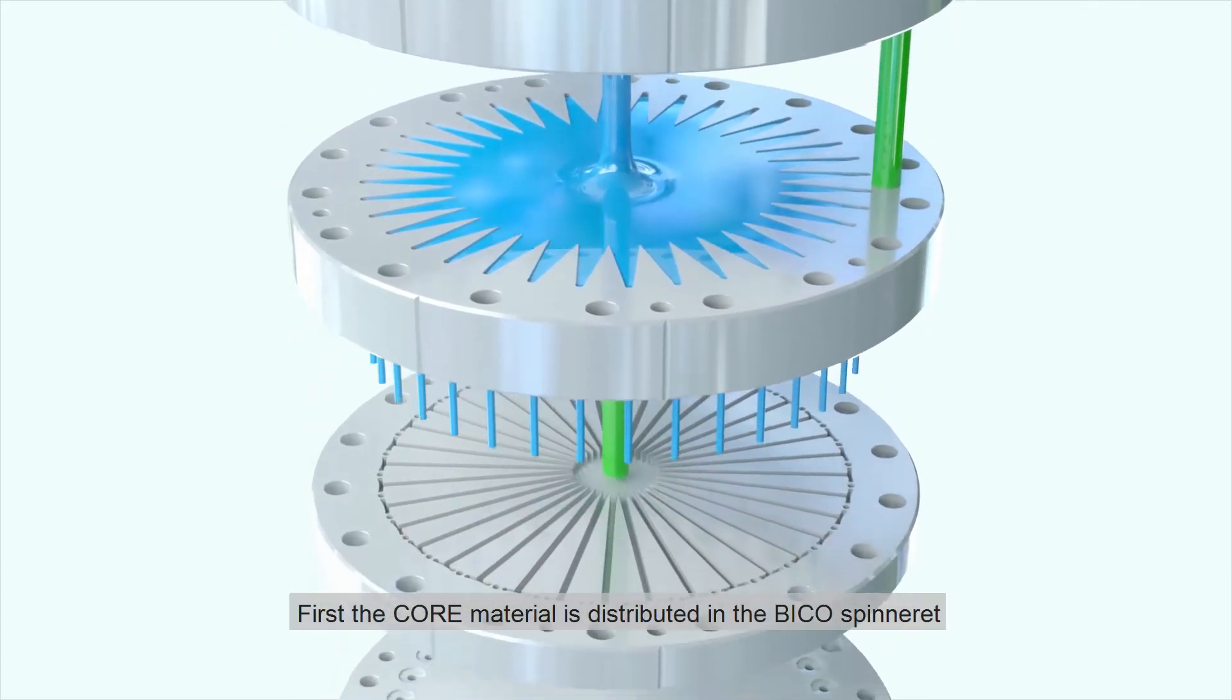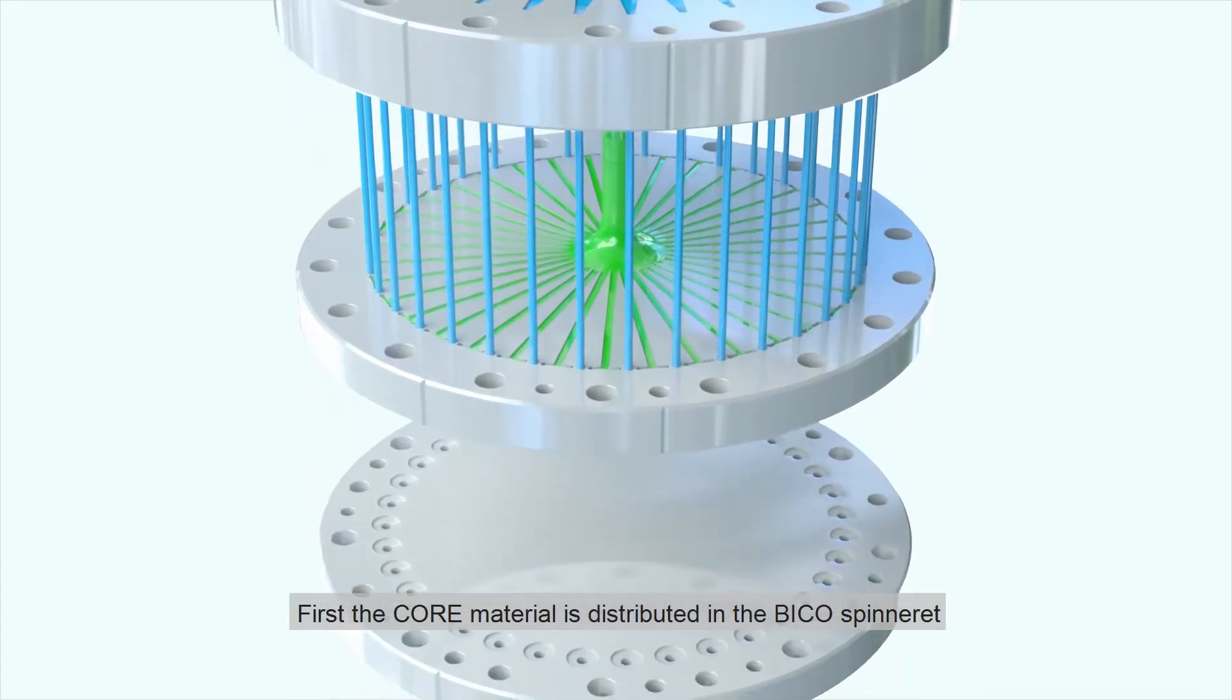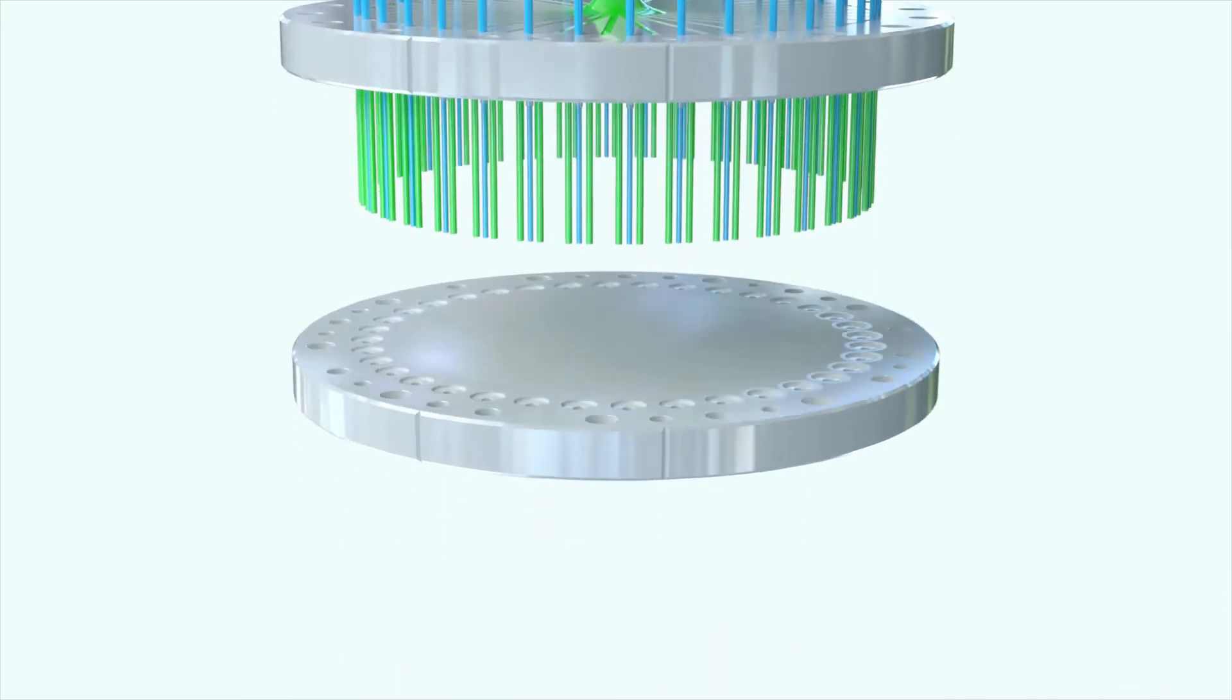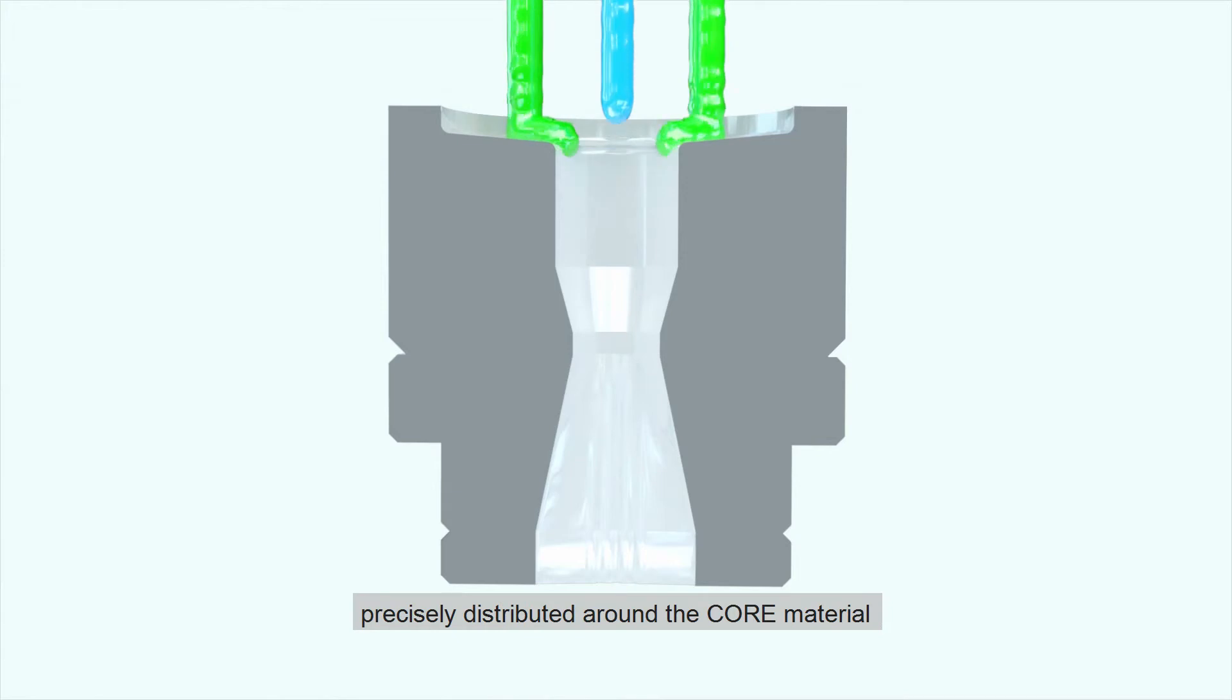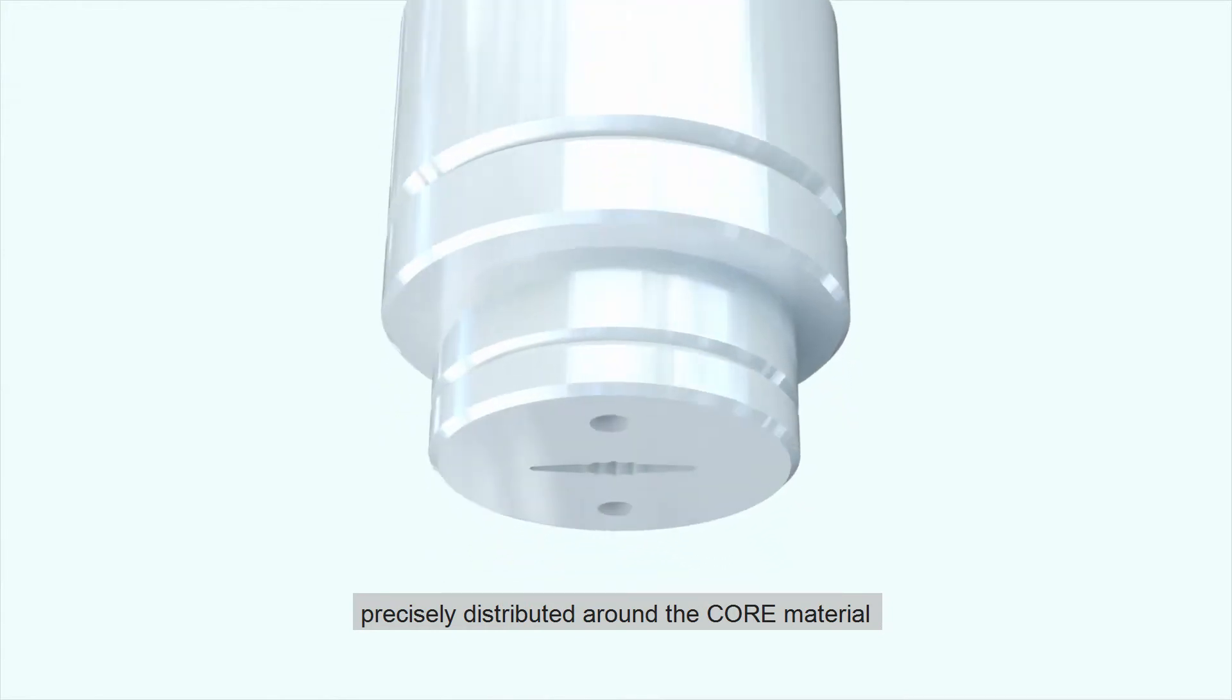First, the core material is distributed in the BICO spinneret. Second, the shell material is precisely distributed around the core material.